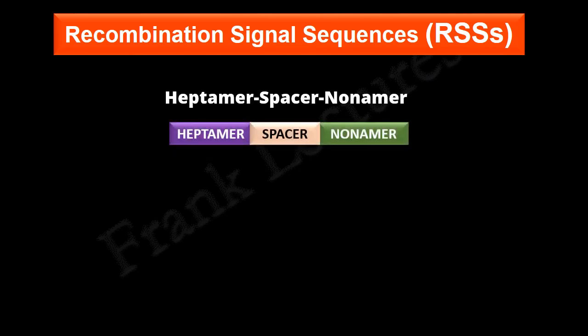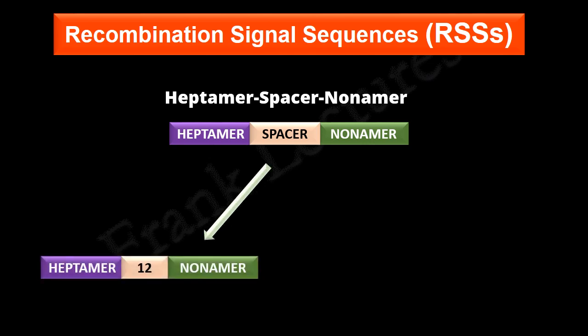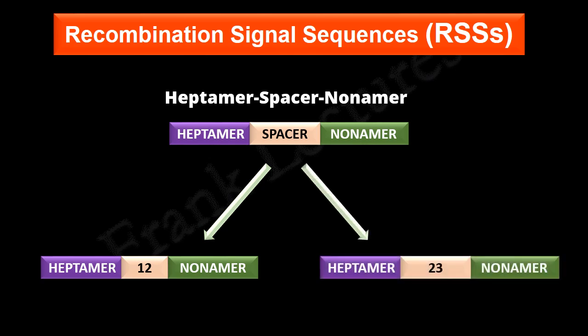Depending on the spacer, we have two types of recombination signal sequences: a recombination signal sequence with a 12 base pair spacer, and a recombination signal sequence with a 23 base pair spacer.